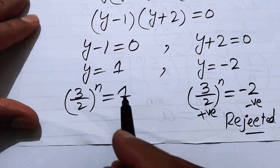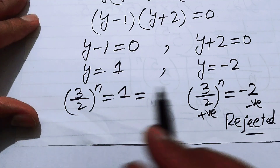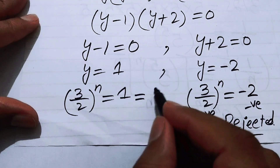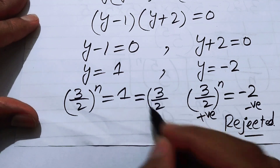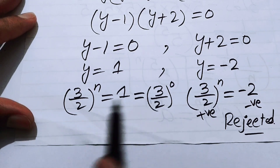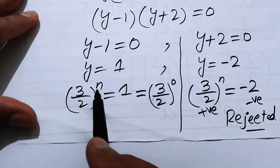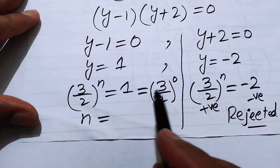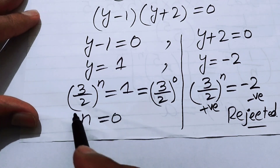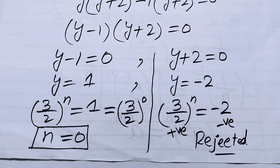Proceeding with the first case only: 3 over 2 to the power of n equals 1. Since anything to the power of 0 equals 1, we write the right side as 3 over 2 to the power of 0. The bases on both sides are the same, so we equate the exponents: n equals 0 is the only solution of the given equation. Thank you for watching — please subscribe for more videos.